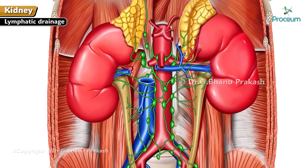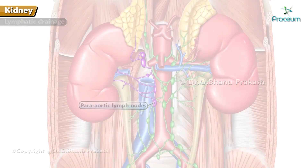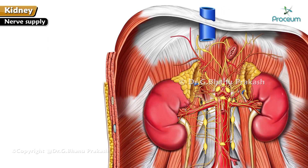Lymphatic drainage: Lymphatics from the kidney drain into para-aortic lymph nodes at the level of the origin of the renal arteries.